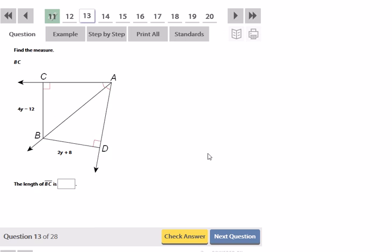Find the length of BC, segment BC. Well, what I know about BC is that it's 4Y minus 12. I can tell from these markings here that this ray AB is an angle bisector. So, not only does it cut the angle in half, it is equidistant from the sides of that angle. So, that means that 4Y minus 12 should be equal to 2Y plus 8.